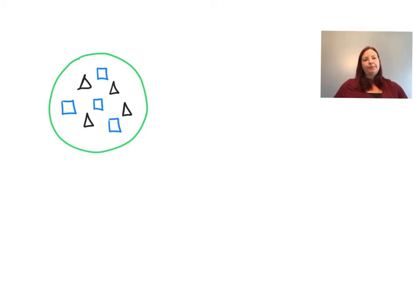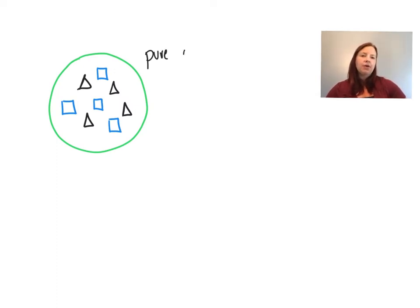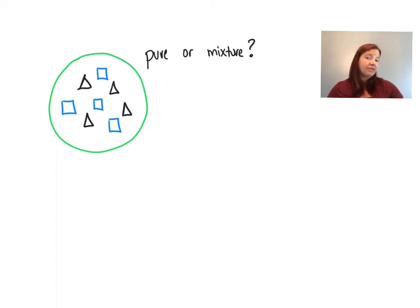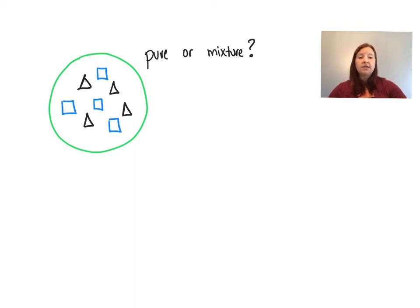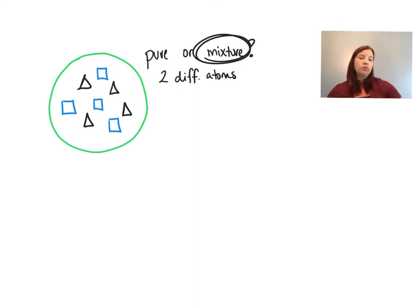Here is example number two. Draw the image and decide: do you have a pure substance or a mixture? Remember, if you decided pure substance, you don't classify it as homogeneous or heterogeneous — only mixtures are. Looking at this image, I have triangles and squares, which might represent two different kinds of atoms. Since I don't have all the same atom or molecule, I would say this is a mixture — the blue squares might represent salt and the triangles might represent water.